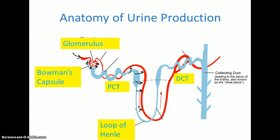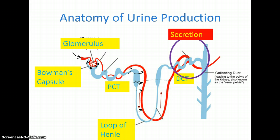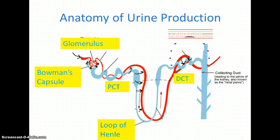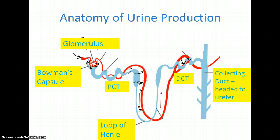The third step happens in the distal convoluted tubule, which is secretion. The arrows go the other way to fine-tune the concentration of urine — stuff is going back into the filtrate from the blood. Eventually we get to the collecting duct, which heads down to the urinary system.